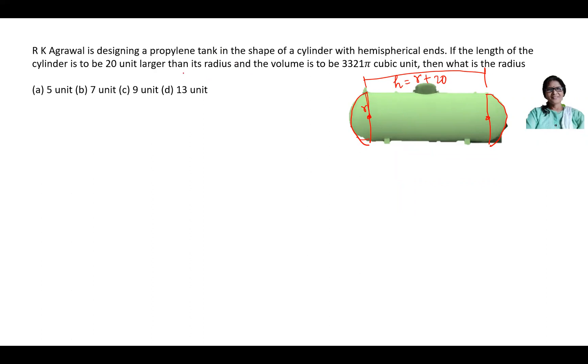The question again: R.K. Agarwal is designing a propylene tank which is the shape of a cylinder with hemispherical ends. The length of the cylinder is 20 units larger than the radius. And I've written h is r plus 20. Volume is 3321π cubic unit. What is the radius?